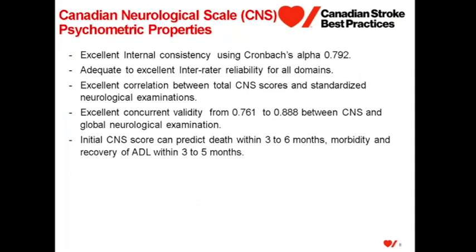For patients with an initial Canadian Neurological Scale score of 11 or more, 2.1% had died within six months, whereas patients who had a Canadian Neurological Scale score of 9 or less, 13.2% had died within six months.